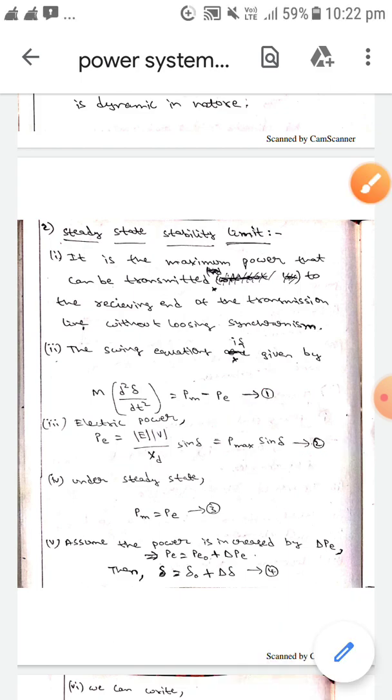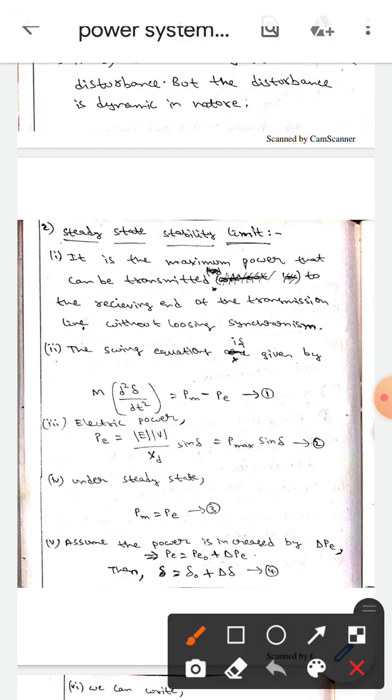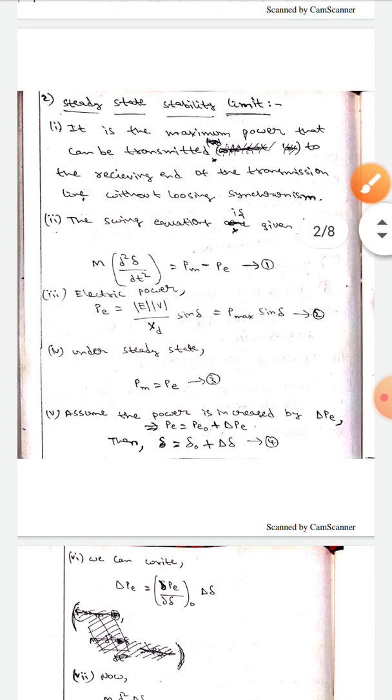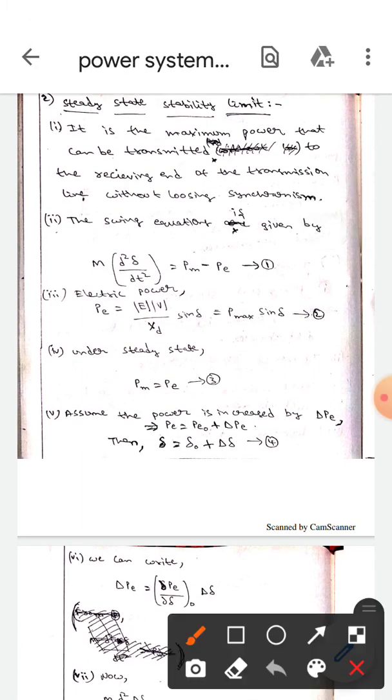Under steady-state condition, Pm equals Pa. Let it be equation 3. Now, let us assume that the power is increased by ΔPe, which means Pe = Pe0 + ΔPe. Then we get δ = δ0 + Δδ. Let it be equation 4.